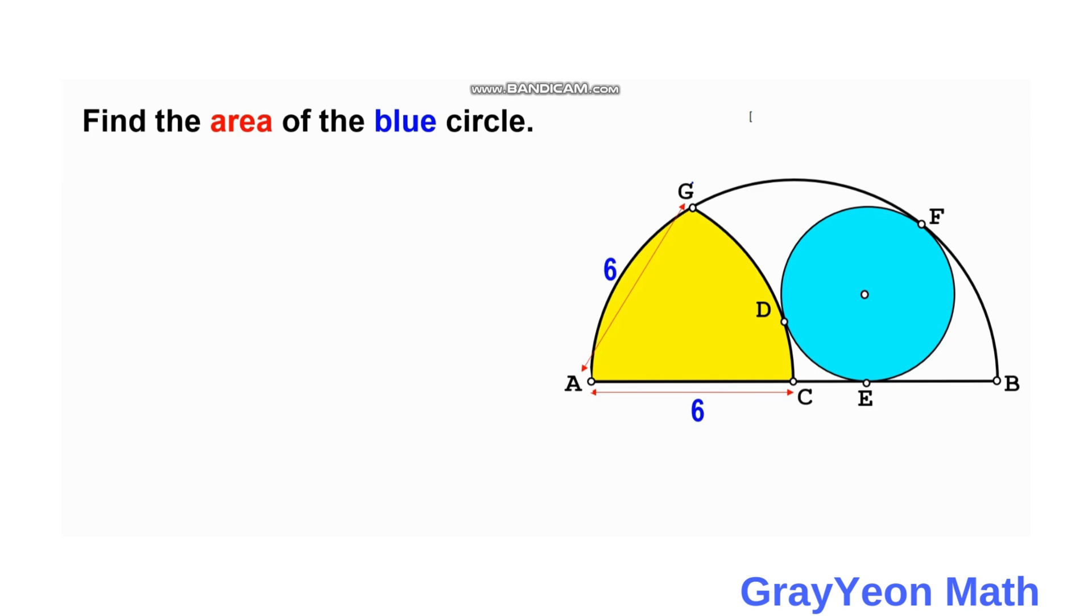So what we can do is we can actually draw a right triangle starting from the center of this blue circle for one leg, and from the center also to this point of tangency up to this point A, and also from the center to point C.